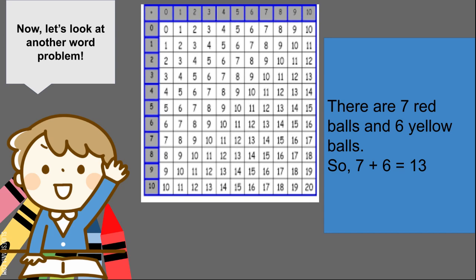Alright, let's go over the problem together. So, if there are 7 red balls and 6 yellow balls, let's hop over 6 places, but we're going to start at 7. So, let's make our hops. 8, 9, 10, 11, 12, 13. 7 plus 6 equals 13.